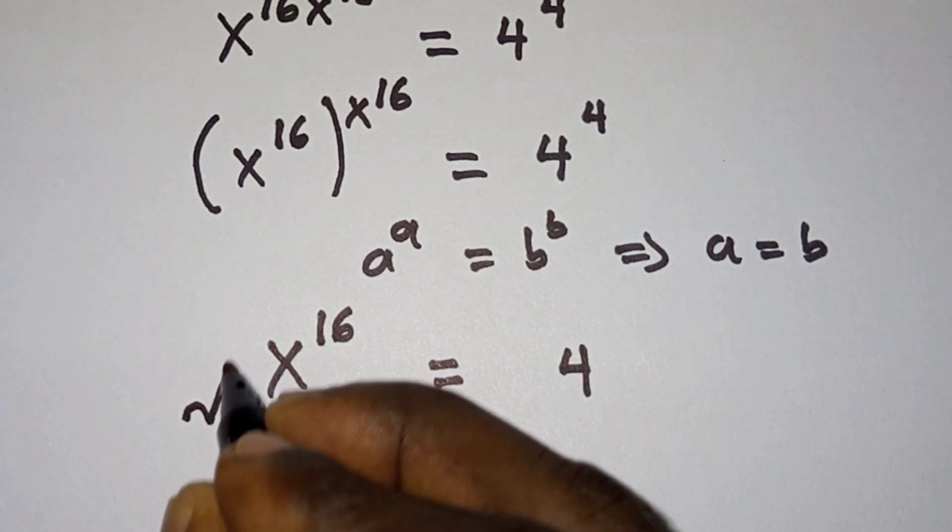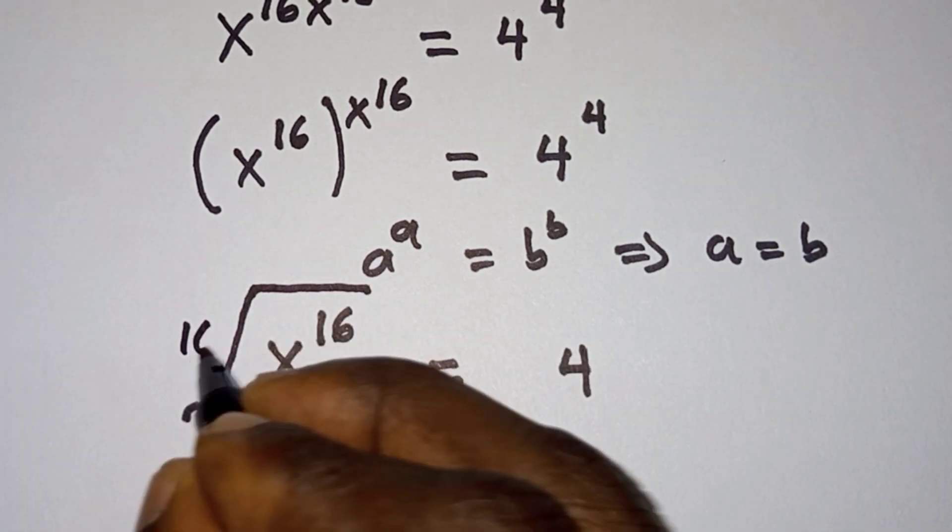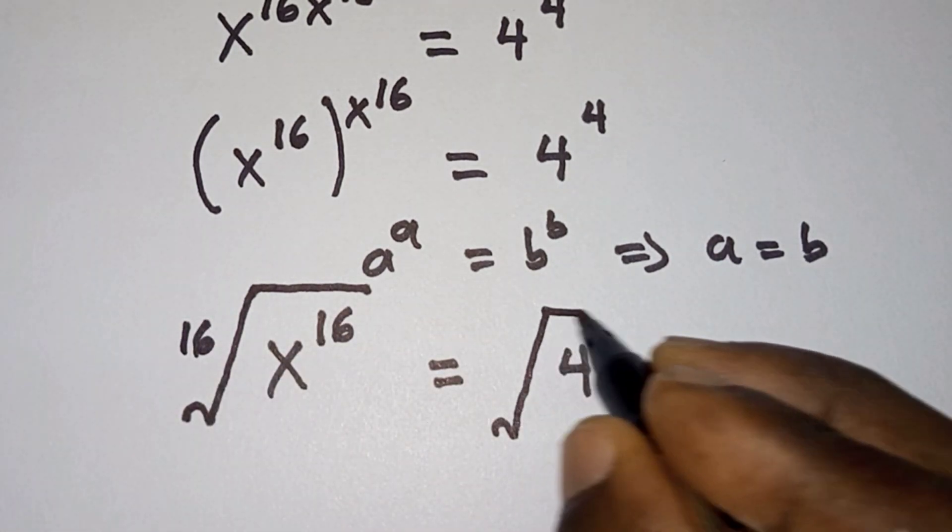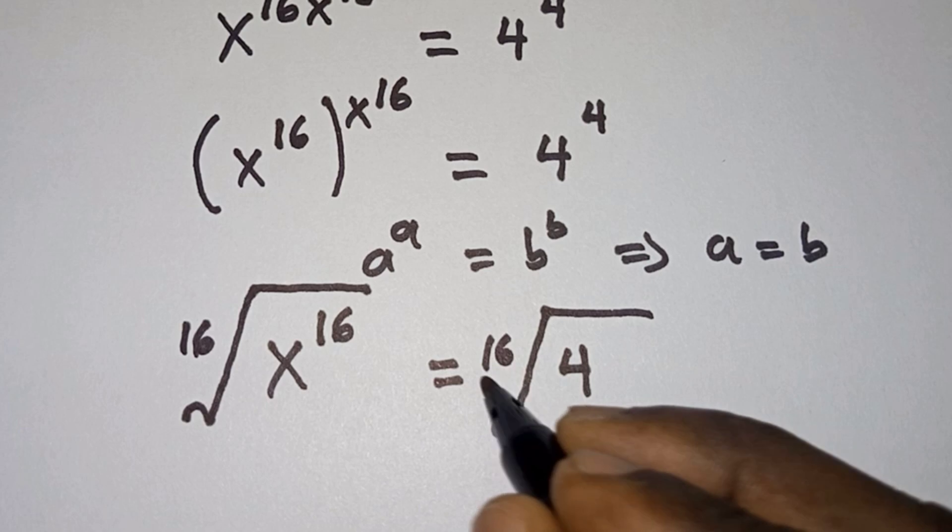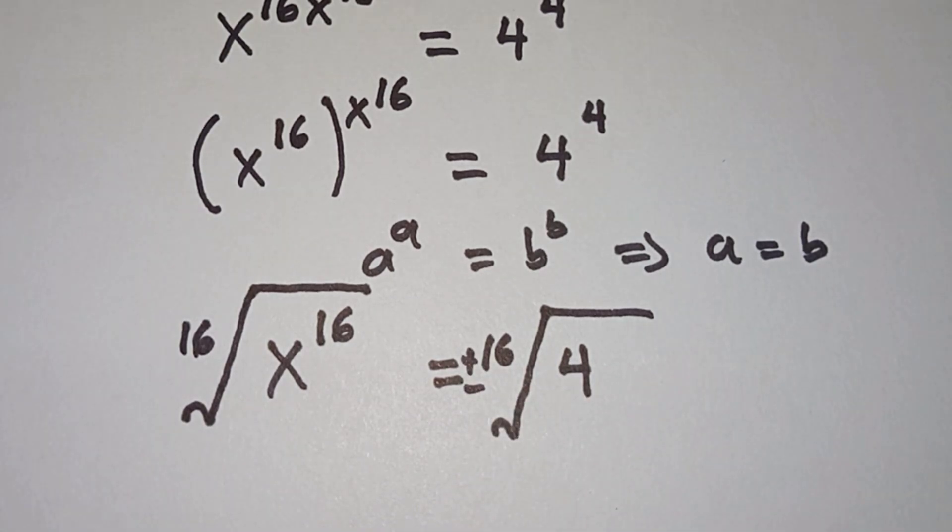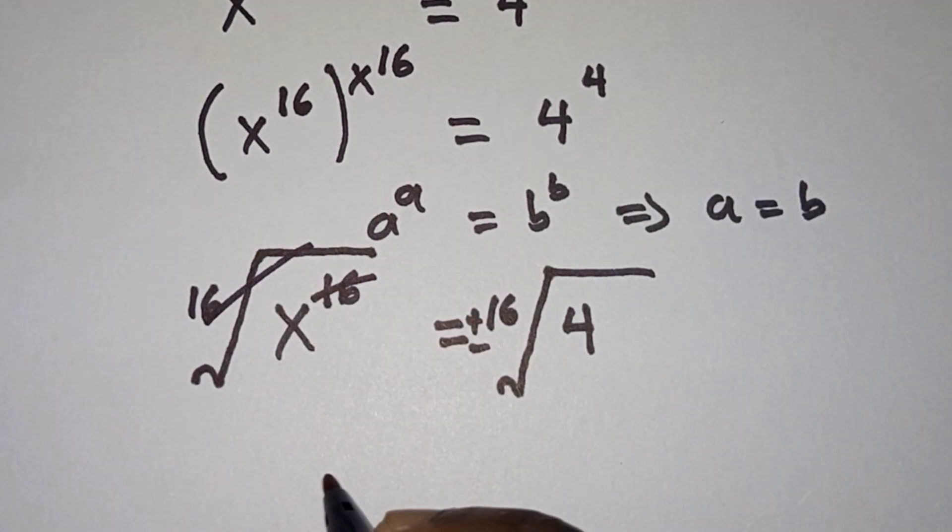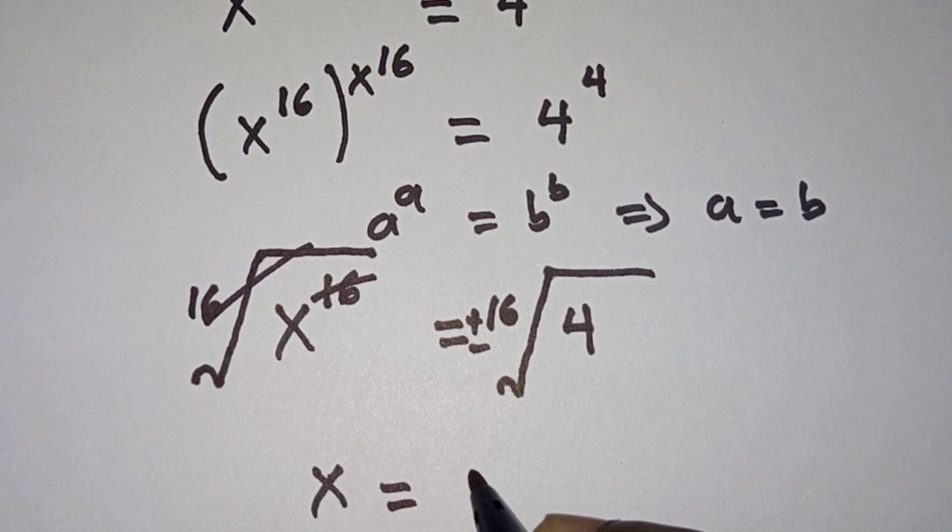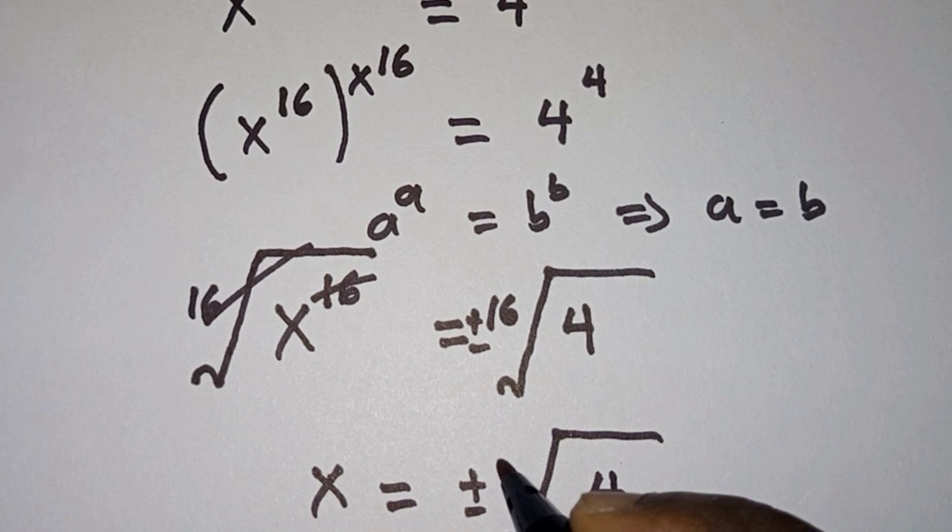We are looking for x, so we're going to take the 16th root on each side of the equation. But remember, we have plus or minus. And we see that this 16 and this 16 root cancel. We have x is equal to plus or minus the 16th root of 4.